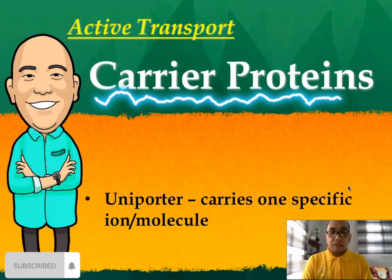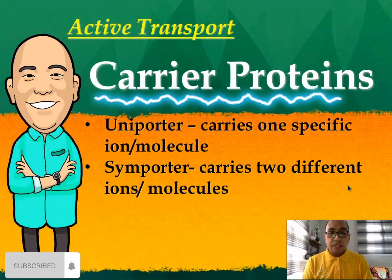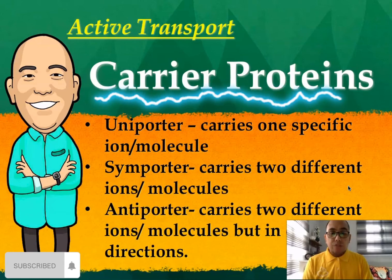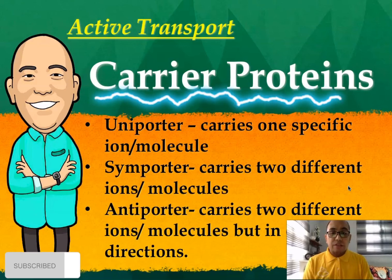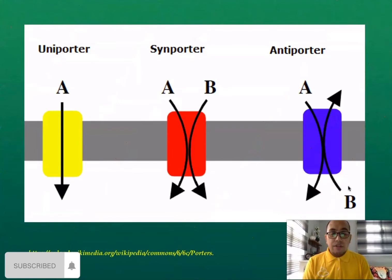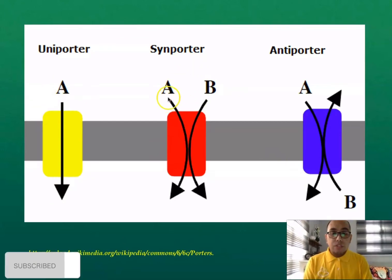Now let's look at carrier proteins. We have three types: the uniporter, the symporter, and the antiporter. The uniporter carries one specific ion or molecule. The symporter carries two different ions or molecules in the same direction. The antiporter carries two different ions or molecules but in different directions. In this diagram we can see the difference: uniporter moves one molecule in one direction; symporter moves two kinds of ions or molecules in the same direction; antiporter moves two different molecules in different directions.